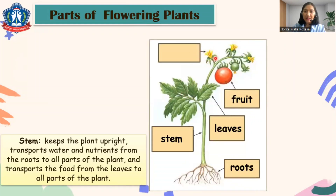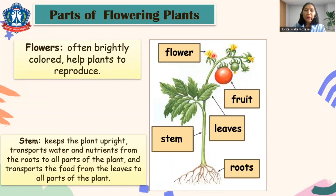And then we have the brightly colored parts — those are flowers. The flowers help the plants to reproduce.